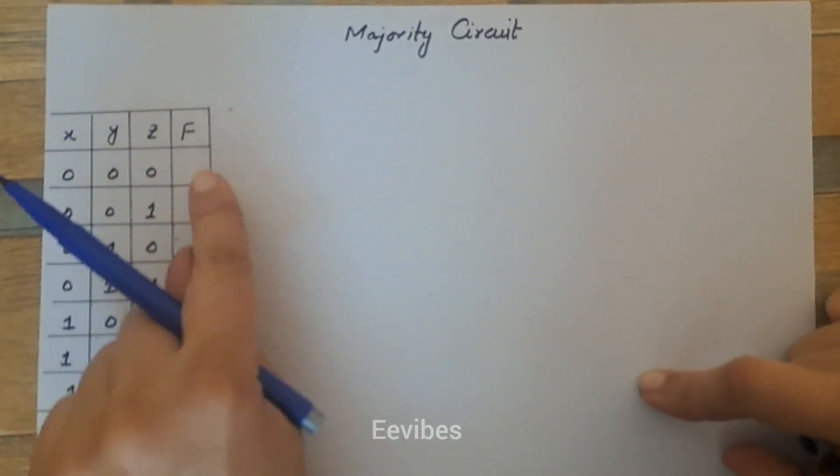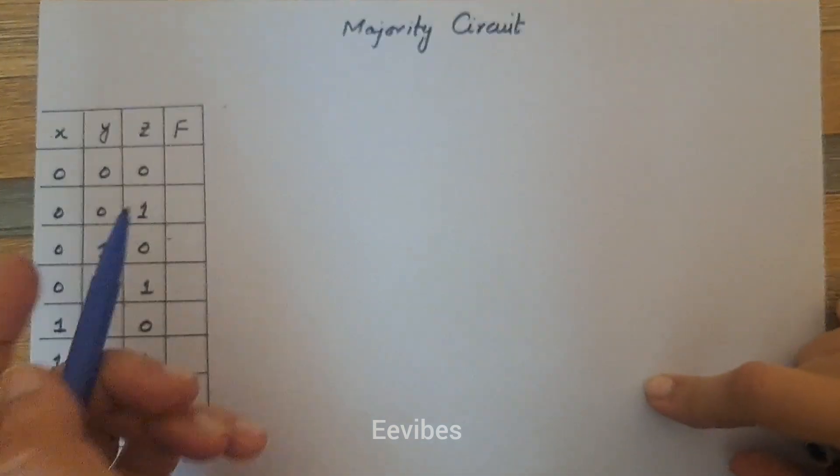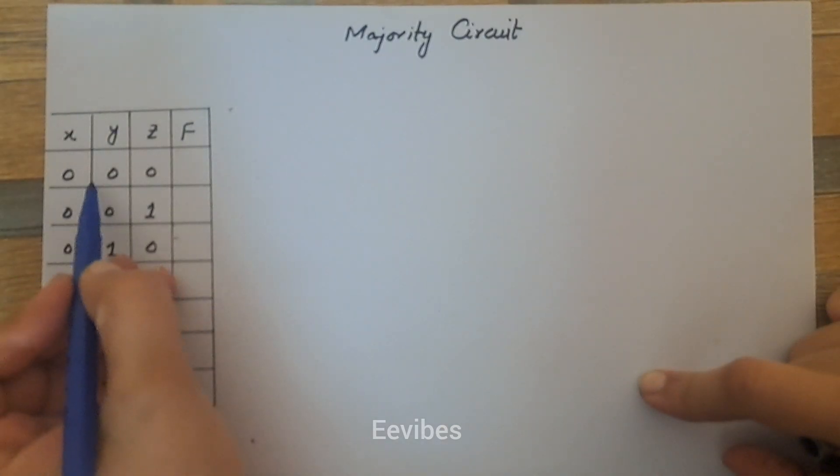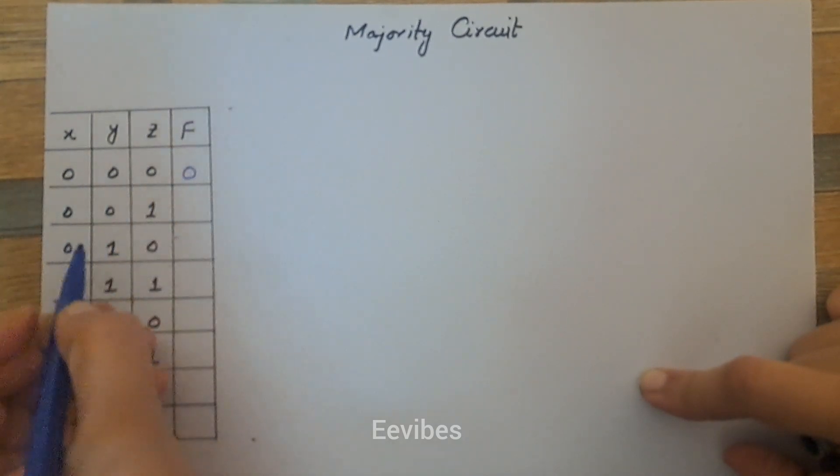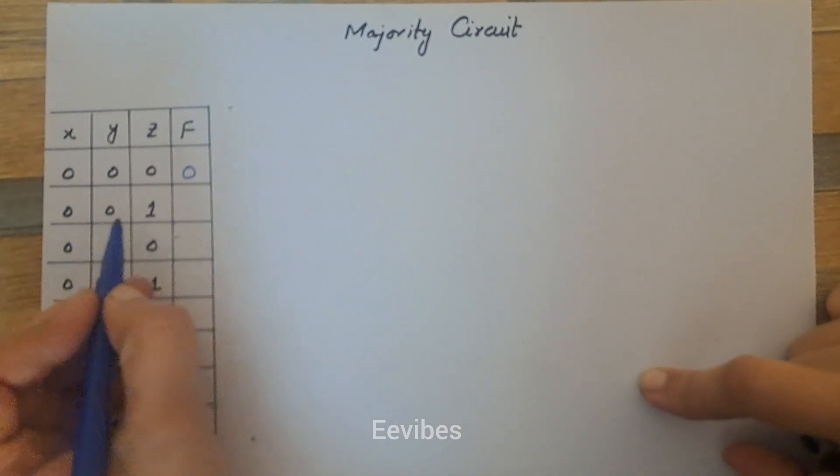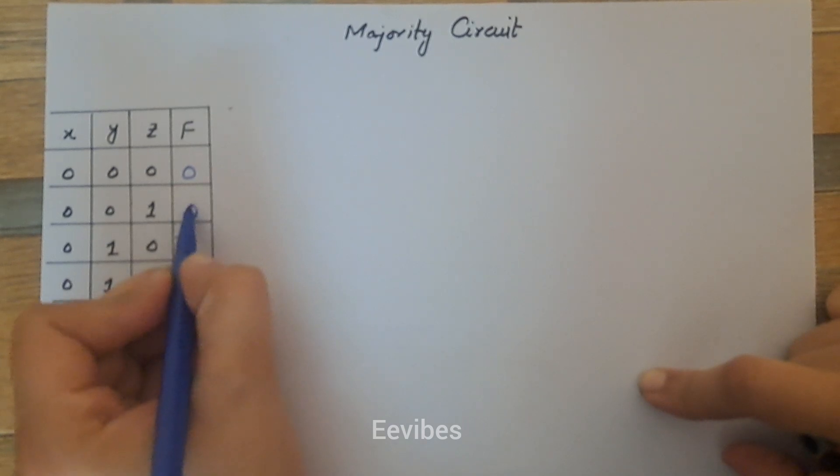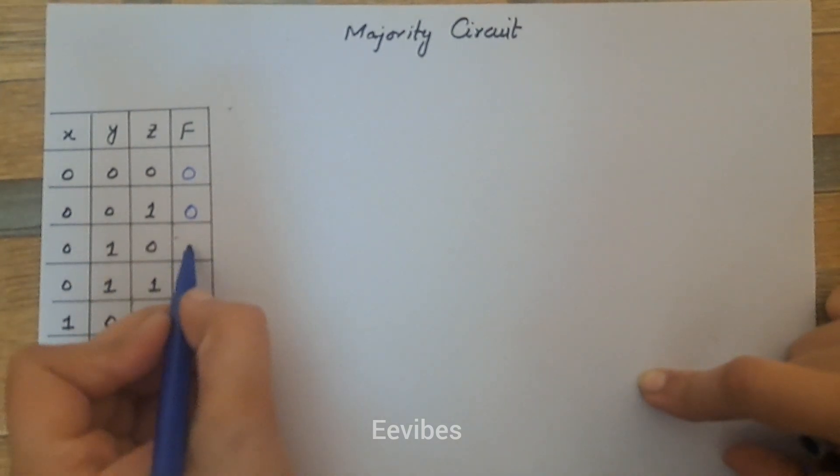First step is to construct the truth table for that problem. Here you can see there is no number of ones present in the input combination, so the output will be equal to zero. And now if you count the number of ones, then only one bit is equal to one while here are two bits equal to zero, so this output function will be equal to zero.